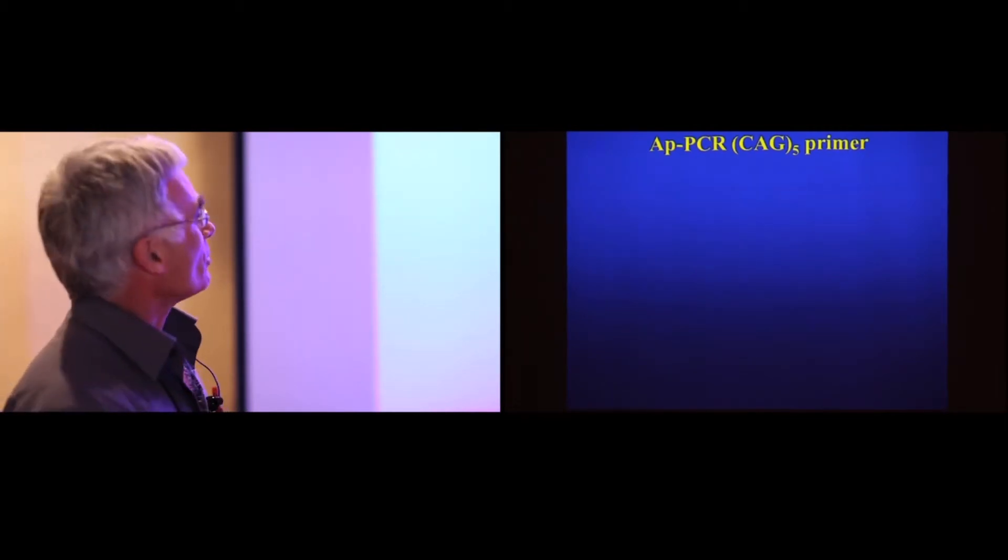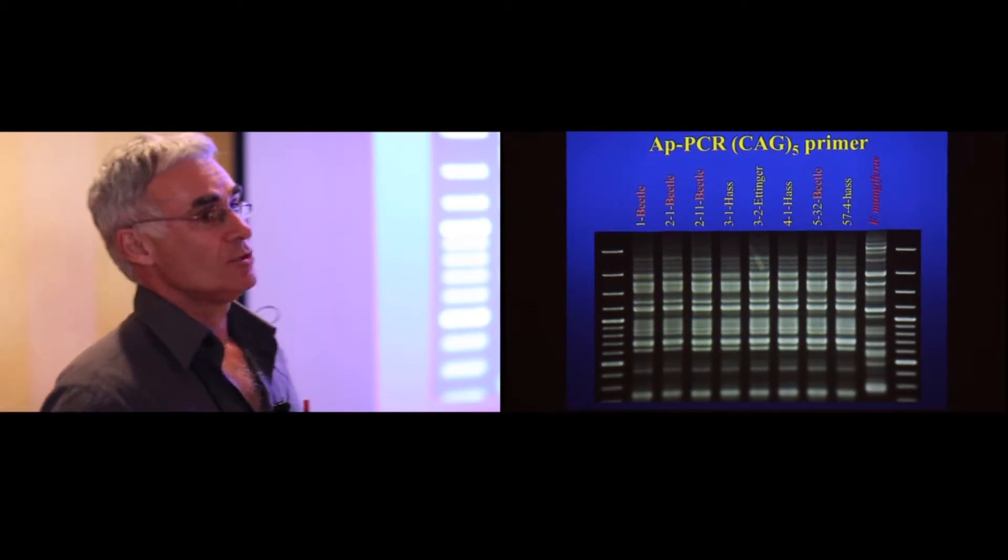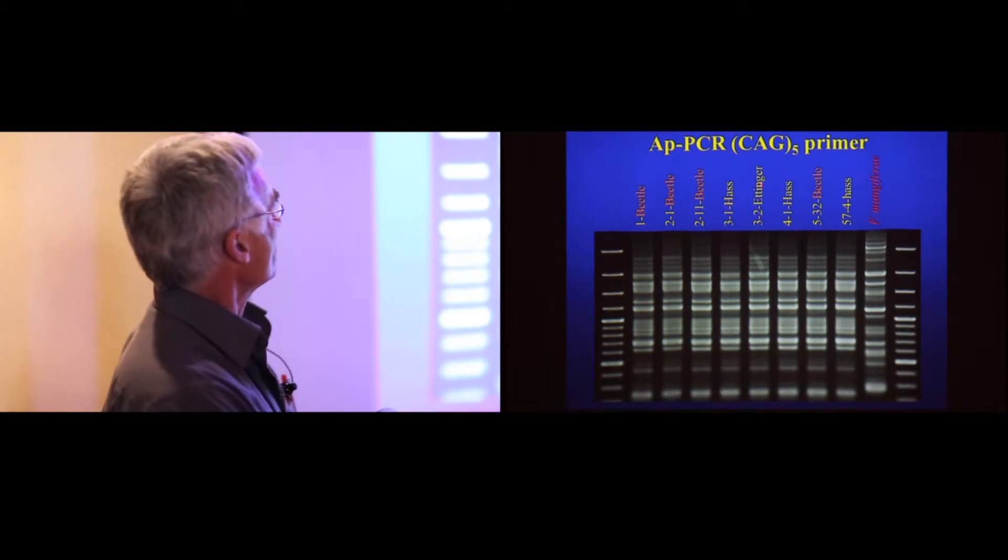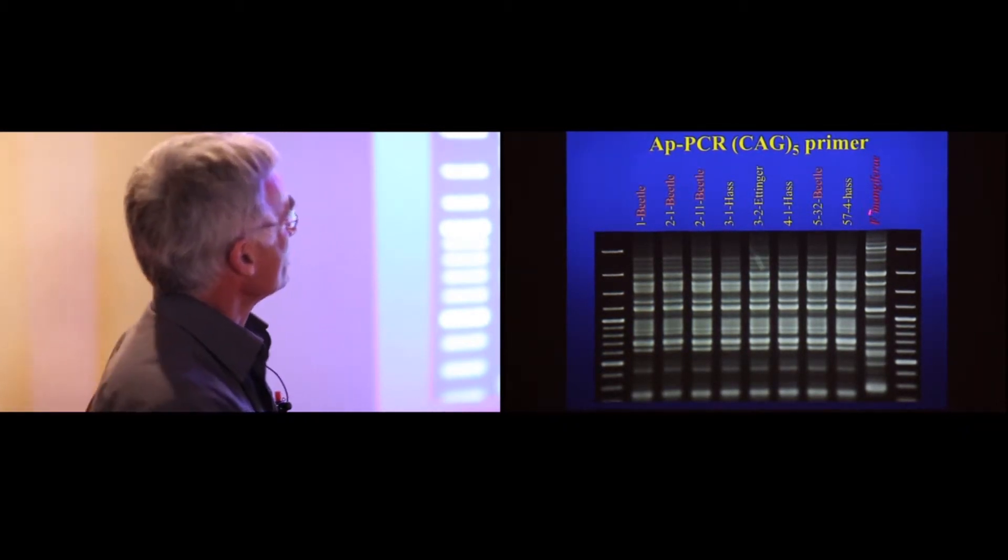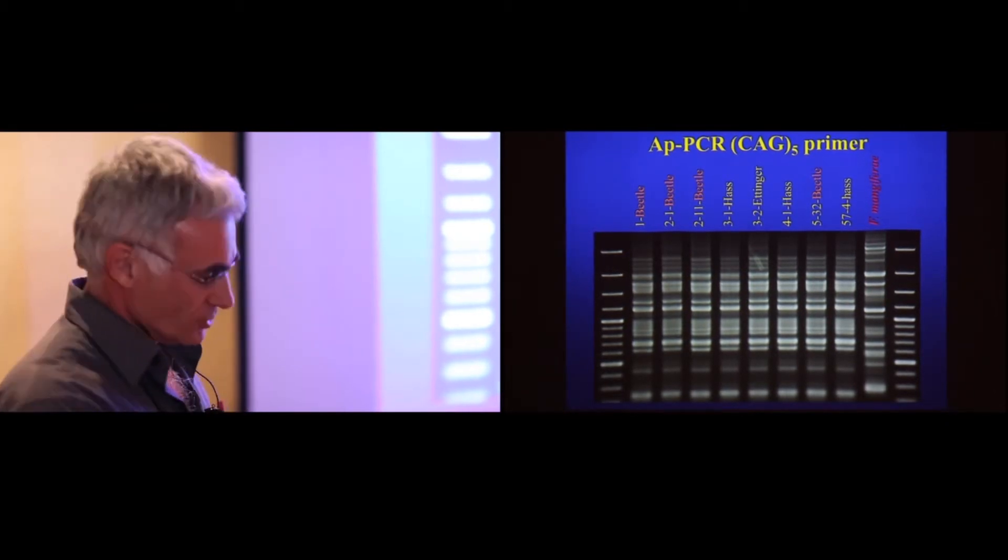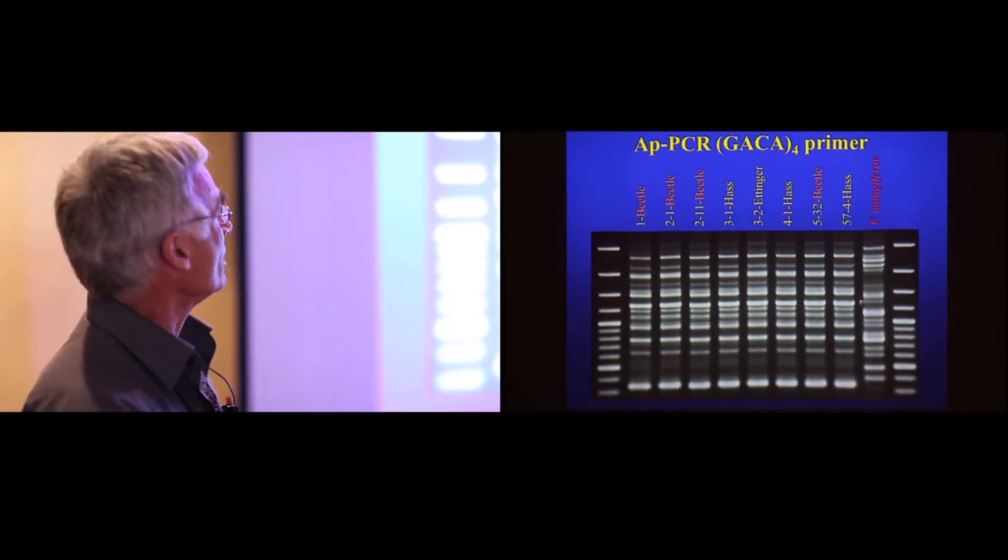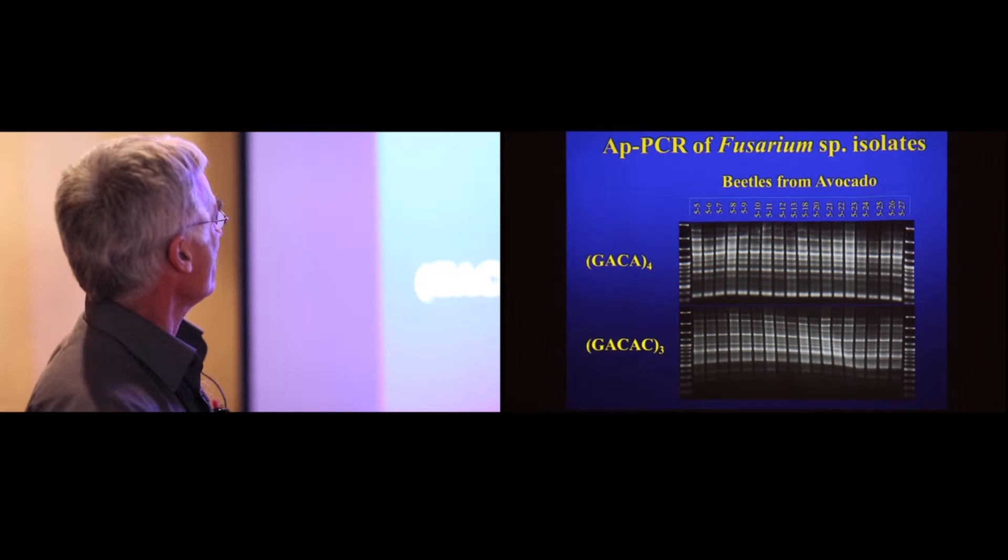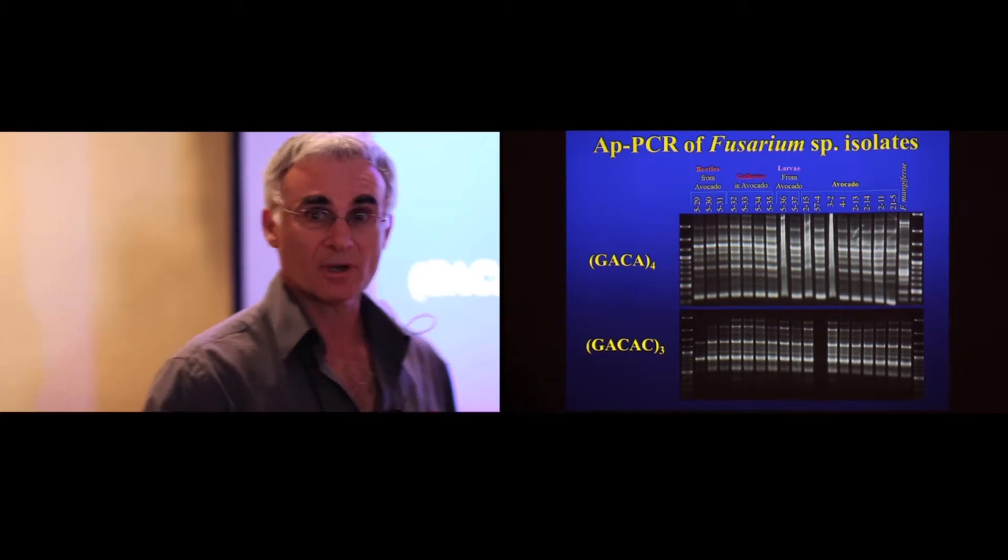Just looking at the genetic diversity of our population of Fusarium, isolated from all our hosts and beetles, live and dead. We use arbitrary primed PCR, and we get very uniform banding patterns. From beetles, from Haas avocado, from Ettinger, also Haas, beetles. This is just a representative outgroup, Fusarium mangifera from mango. Again, another primer showing uniform patterns. We don't have any alternative banding patterns. It appears that we are really working with a clonal population here.